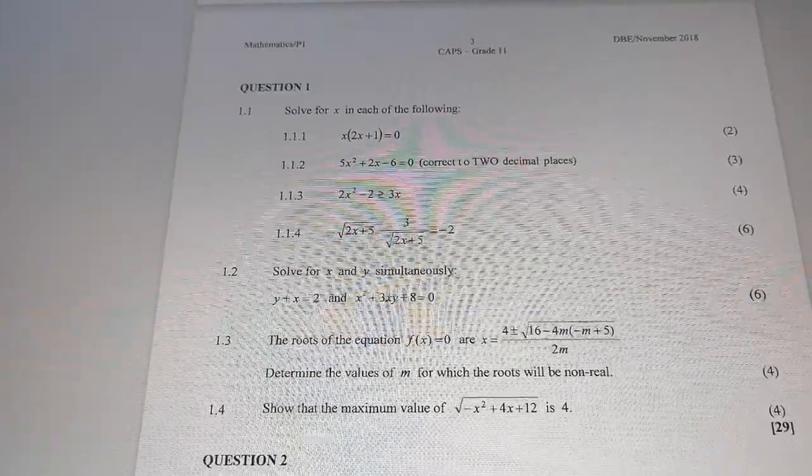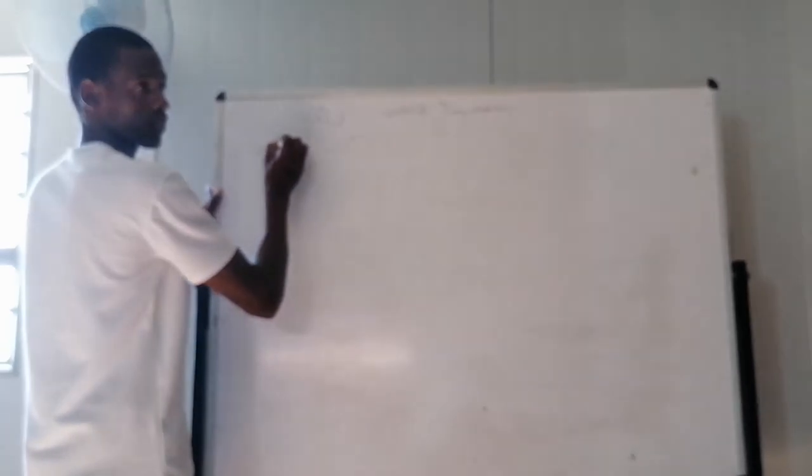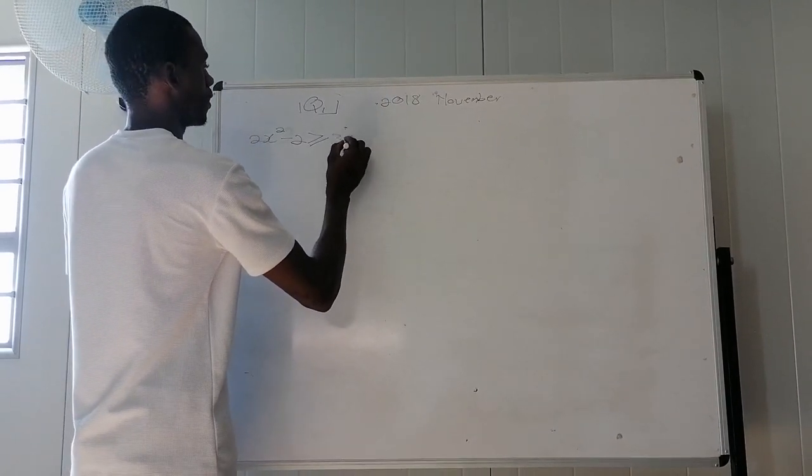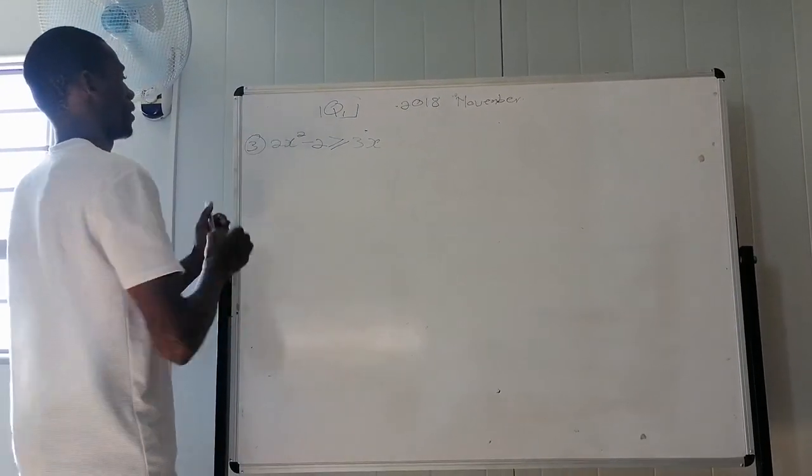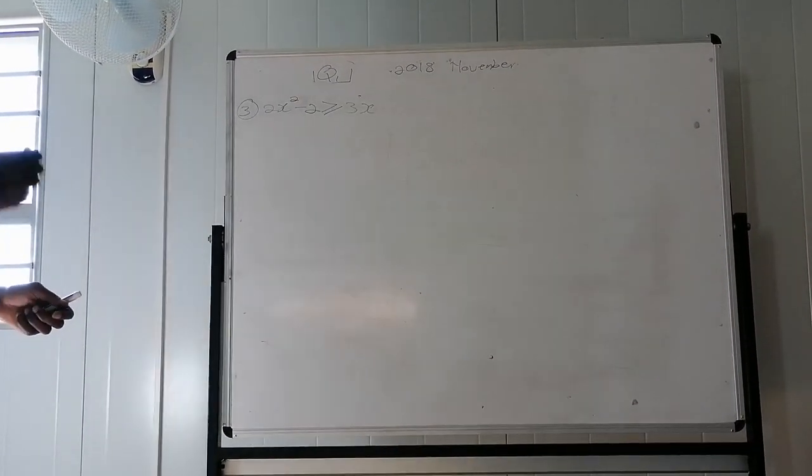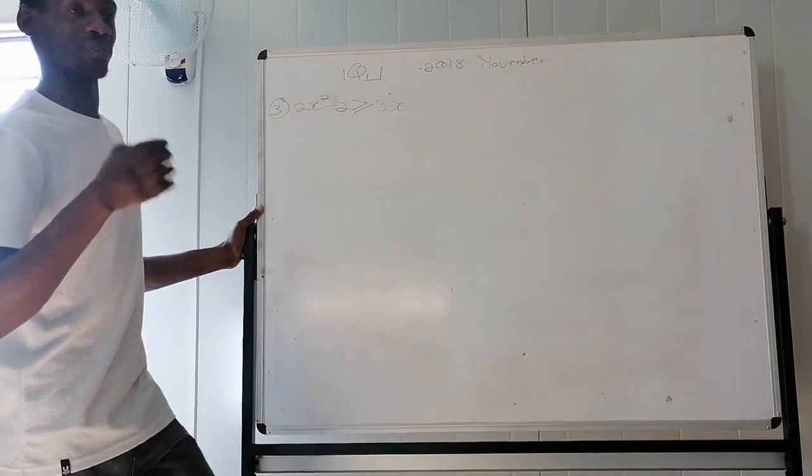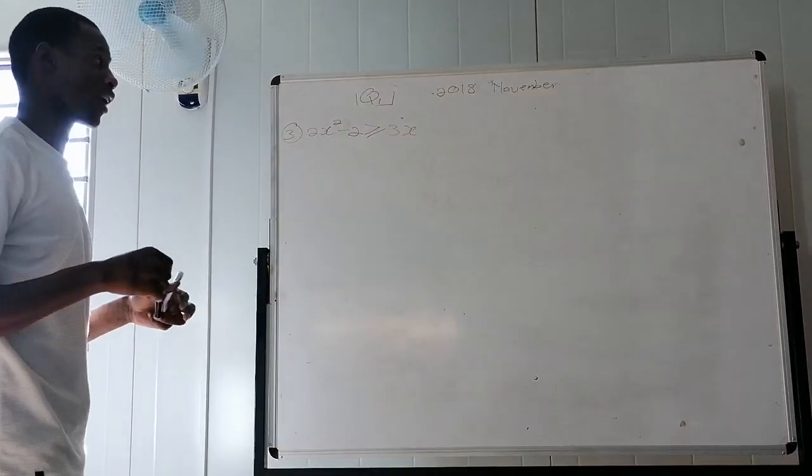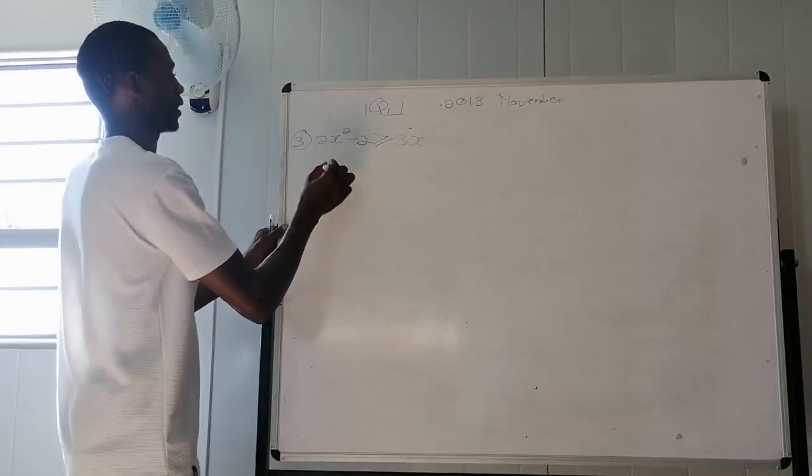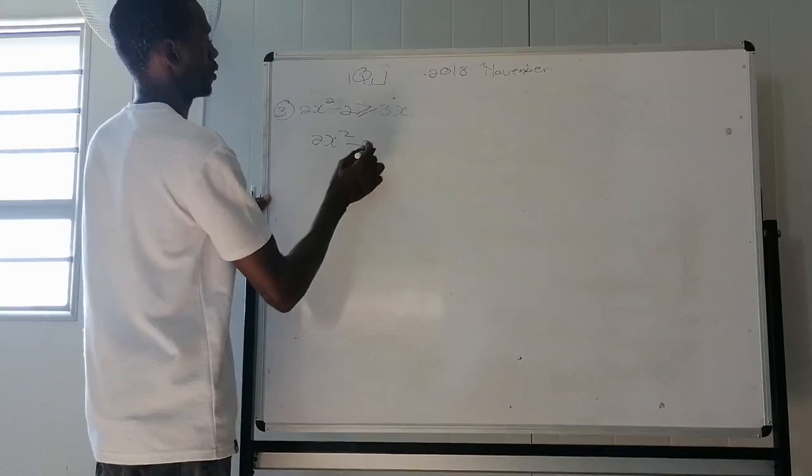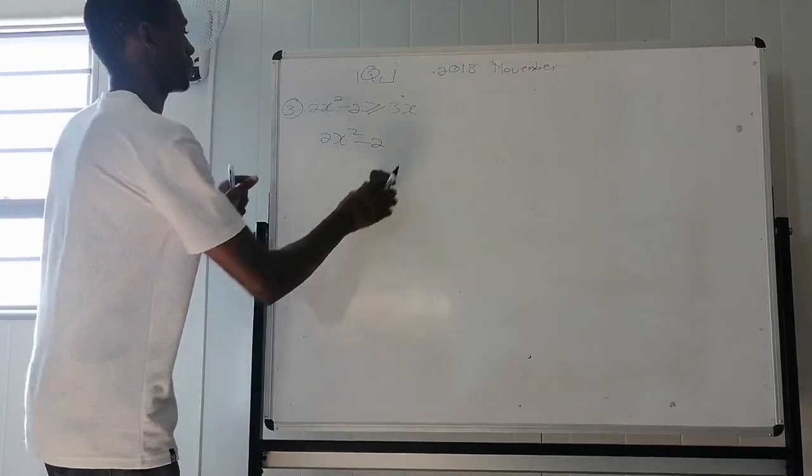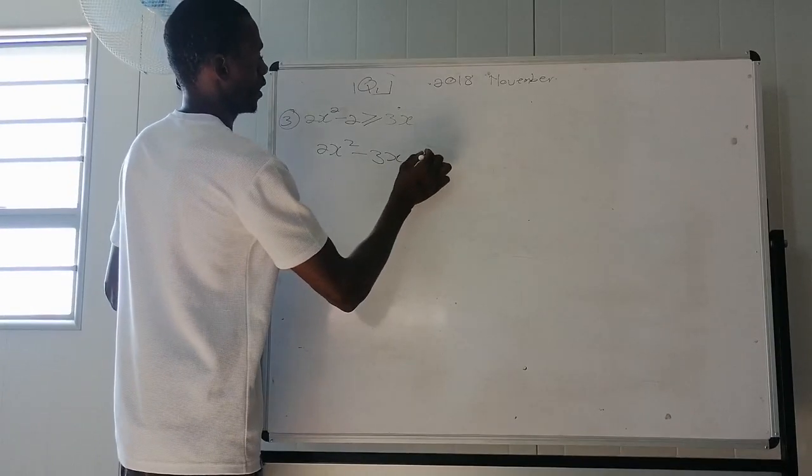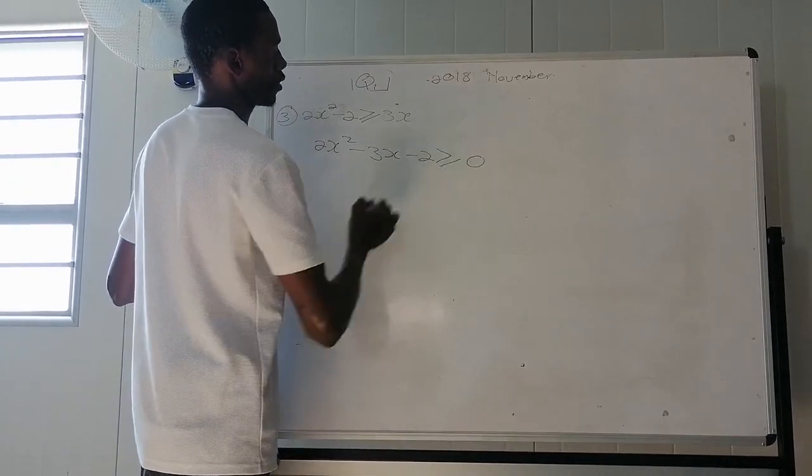Now we are moving to the third one. Oh, the third one guys is the inequalities. So it's 2x squared minus 2 is greater or equal to 3x. This is number 3. Hey, this one I know some of the guys like it. It's a bit tricky, but it's very simple guys. I will show you how to do it. So it says 2x squared minus 2. Let's bring this side inside. It says 3x minus 2 is equal to 0.